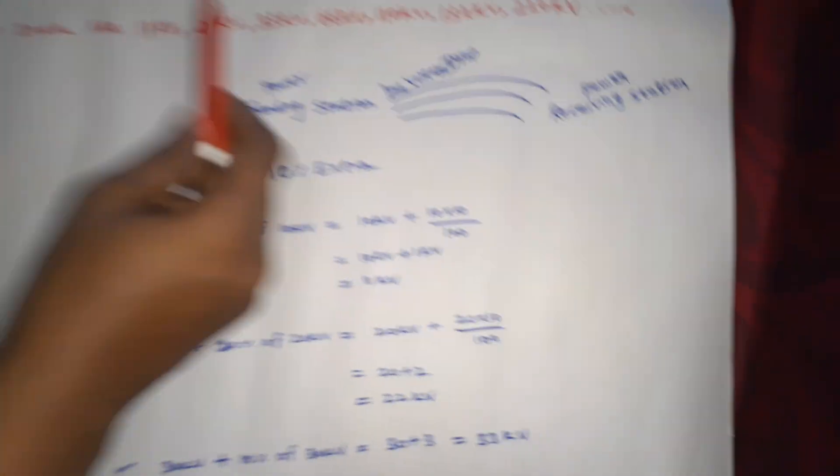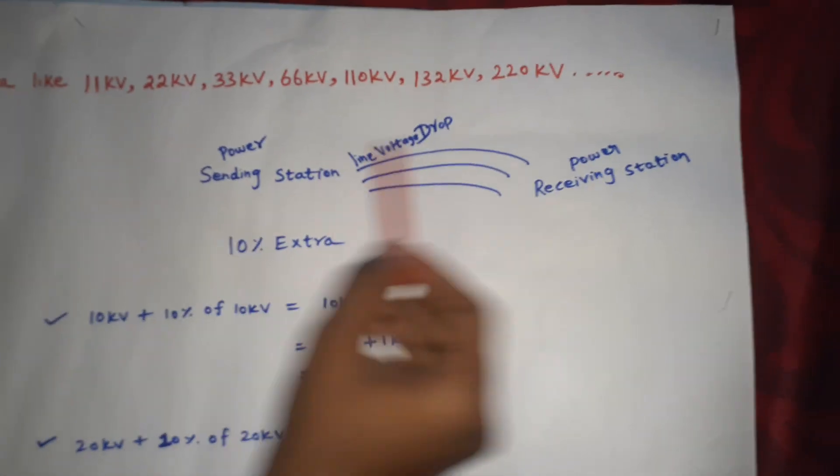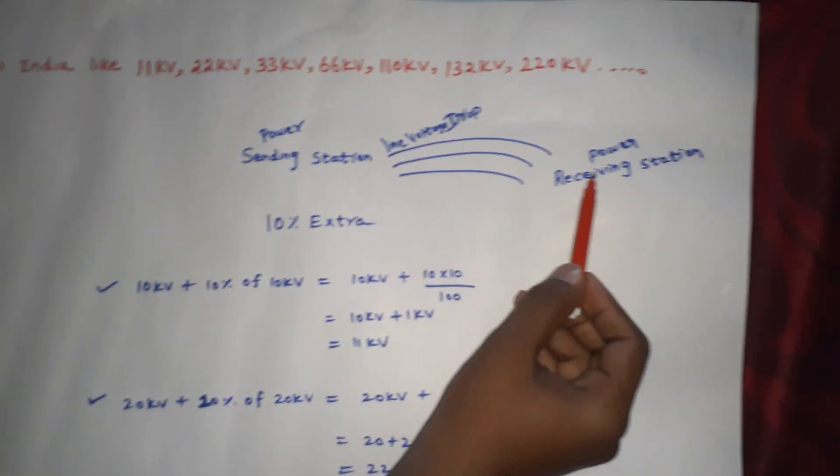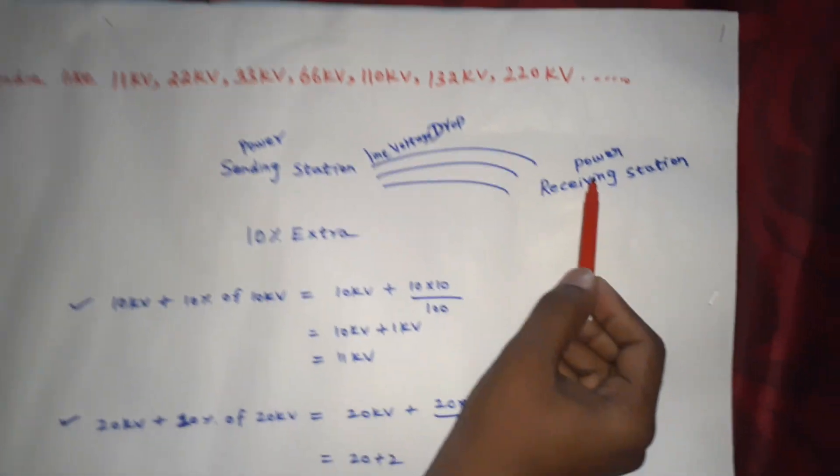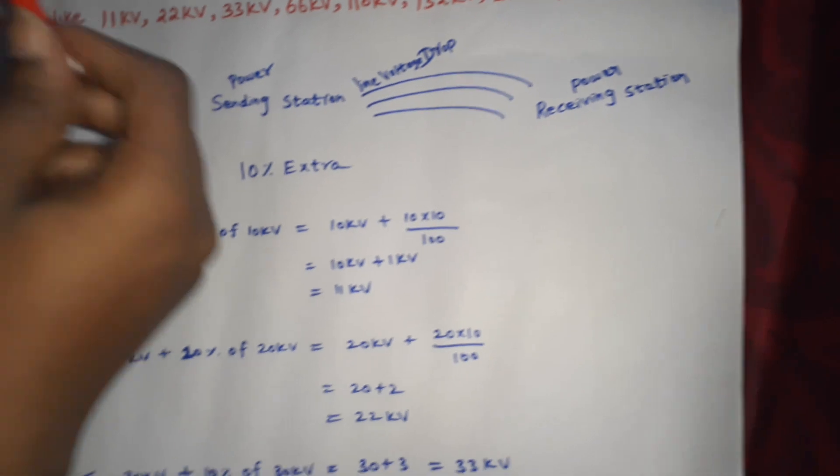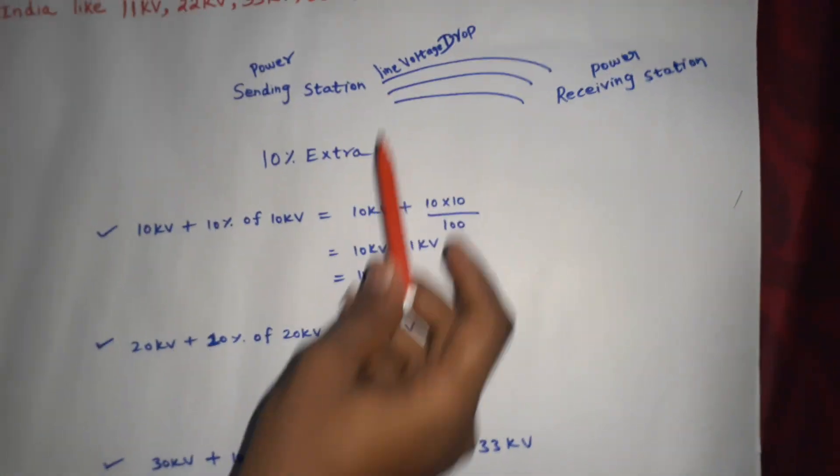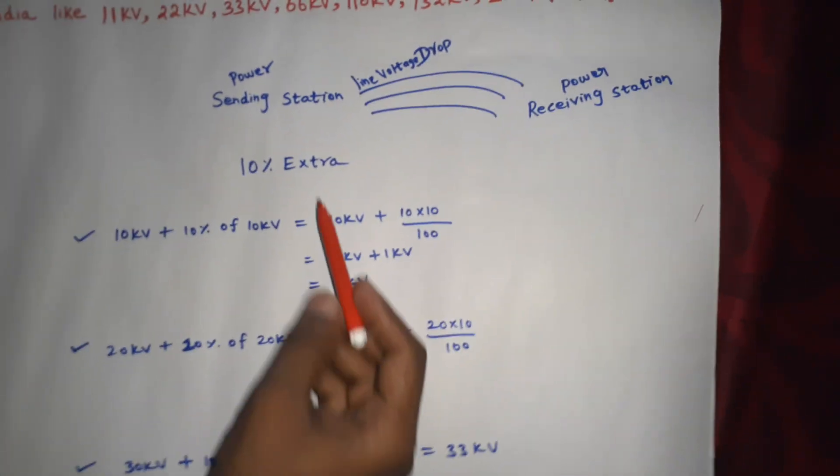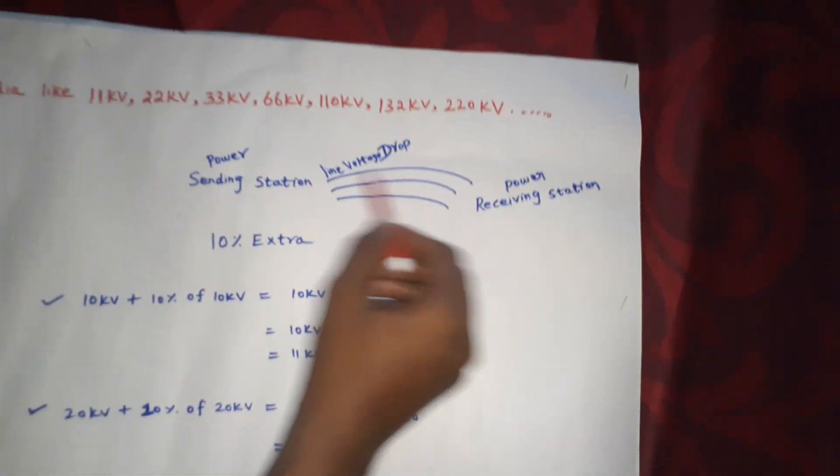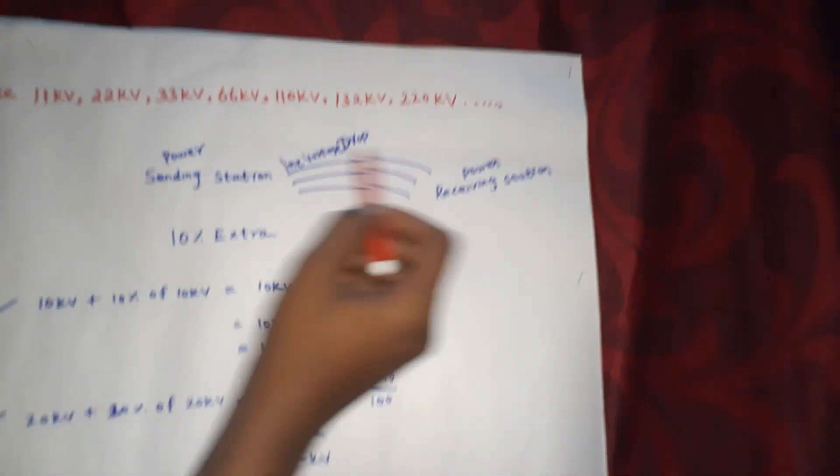Let's say, in power generating station, if you have power generated and transmitted, then we have conductors. The conductors can be aluminum conductors or copper conductors.